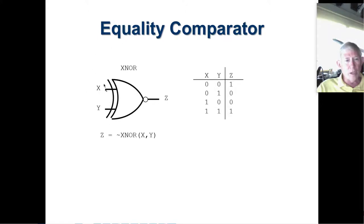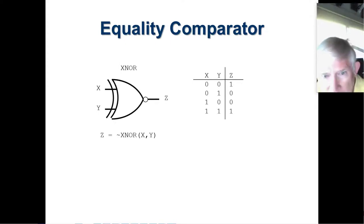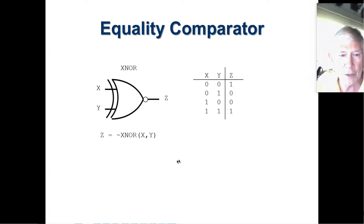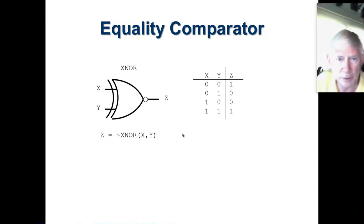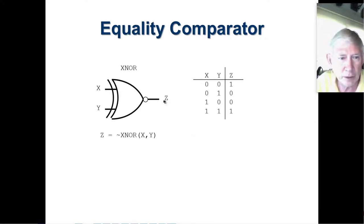Basically, if you're doing a comparison between X and Y to see which one is bigger, the output of this gate tells you whether or not they're equal. If Z is one, then X and Y are equal. If Z is zero, then they're not equal.